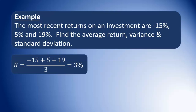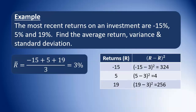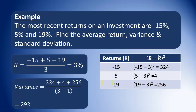Now for the variance, we're going to subtract this 3% from each of those returns and square the results. Negative 15 minus 3, all squared, gives us 324. 5 minus 3 is 2, squared, gives us 4. 19 minus 3 is 16, squared, gives us 256. The formula is the sum of the squared deviations divided by n minus 1. In this case, n is 3, so we divide by 3 minus 1. So 324 plus 4 plus 256, divided by 2, and our answer is 292 — that's our variance.